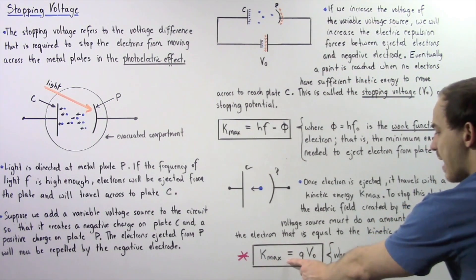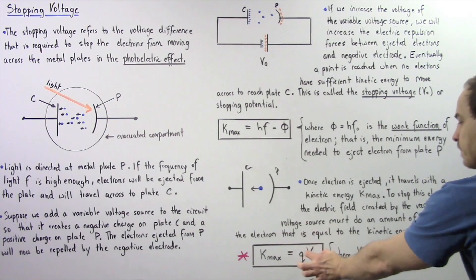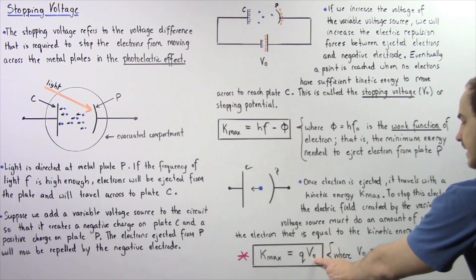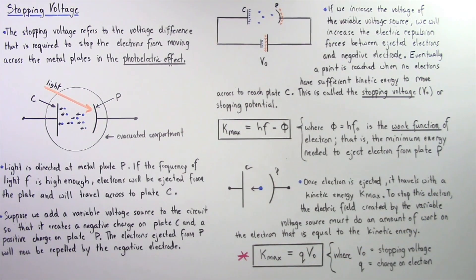So, Kmax is equal to Q multiplied by V0, where V0 is the stopping voltage, and Q is the charge on that single electron.